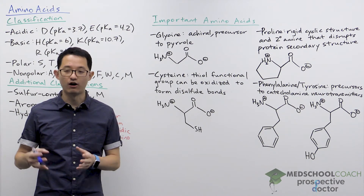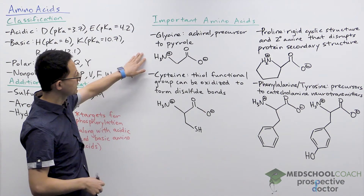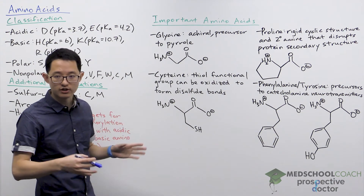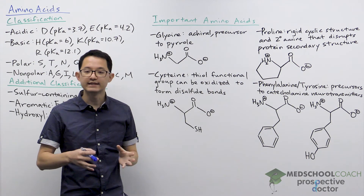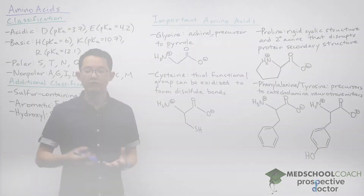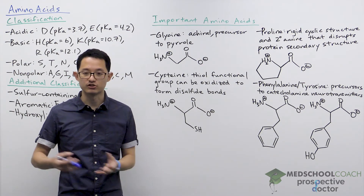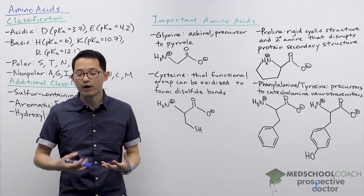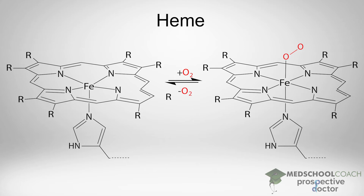All of the other 19 amino acids are chiral molecules with both a D and L form. In addition to being achiral — which makes glycine very flexible in protein structure — glycine is also important because it is a precursor to pyrrole. Pyrrole is a structure you need to have memorized for the MCAT. It is one of the components used to form porphyrins, which can coordinate to cations such as iron. When porphyrin is coordinated to iron, you can form hemes, which are an important component of hemoglobin and can bind oxygen.